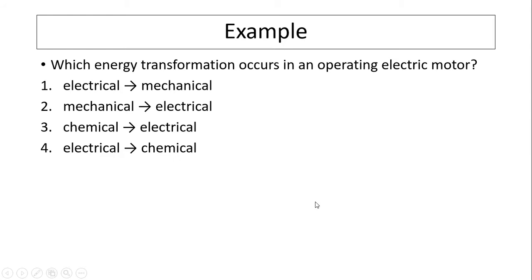Let's do a couple of examples. Which energy transformation occurs in an operating electric motor? So in an electric motor, obviously you use electricity. And motor means to make something move. That's mechanical. Motion is mechanical. So the answer is one: electrical to mechanical.